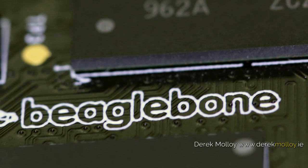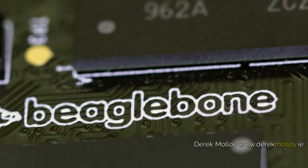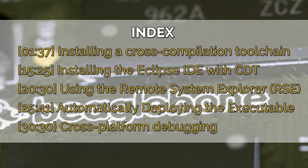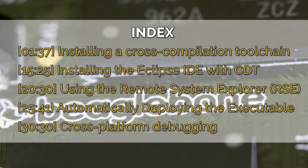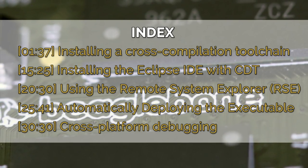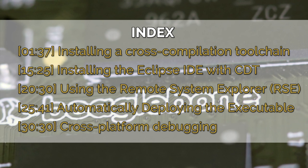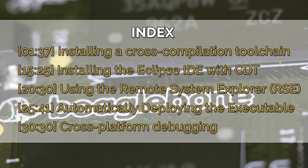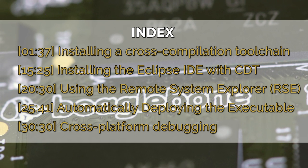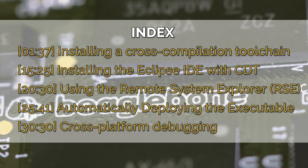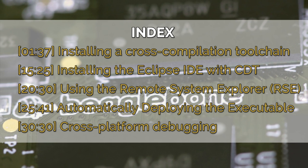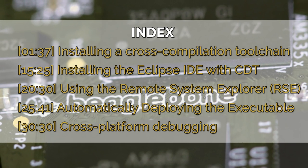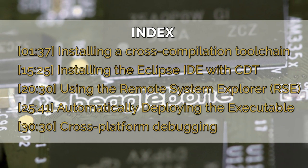This environment will work for any embedded Linux device, but the BeagleBone Black is used in this case. The video covers several topics such as installing a toolchain for cross-compilation, installing the Eclipse C++ development tools known as CDT, using the Remote System Explorer plugin for Eclipse, and automatically deploying an executable to the remote platform on compilation.